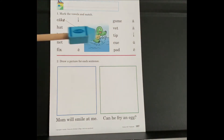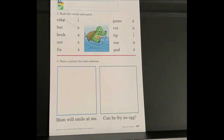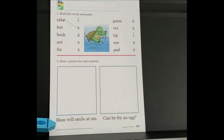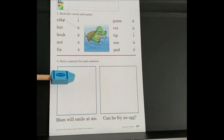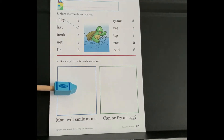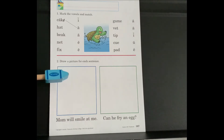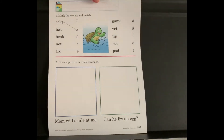Remember, mark the vowels and match the words. Number two, draw a picture for each sentence. Read the sentence and draw the picture inside of the box provided.